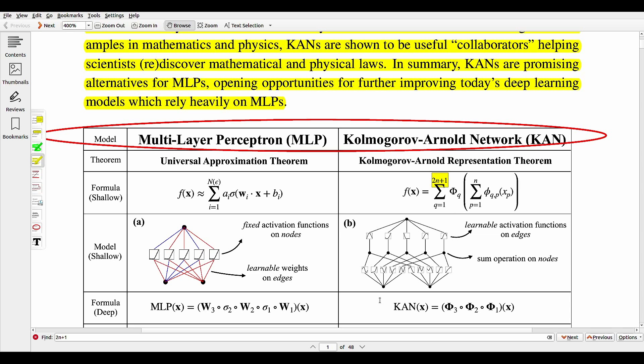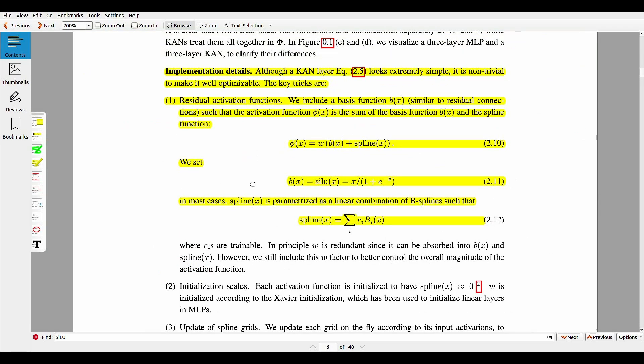A CAN layer with n inputs and n outputs is defined as a matrix of learnable one-dimensional spline functions, and deep CANs are constructed by stacking multiple such layers. The paper also talks about the implementation details.